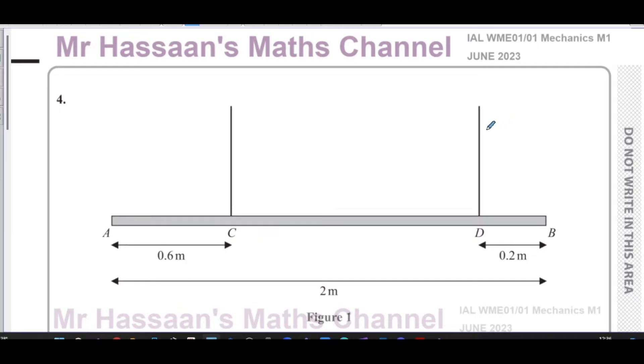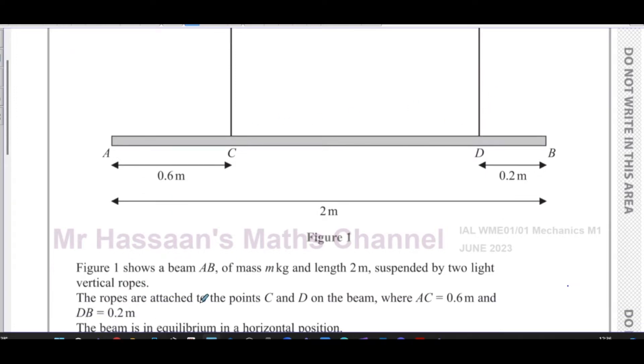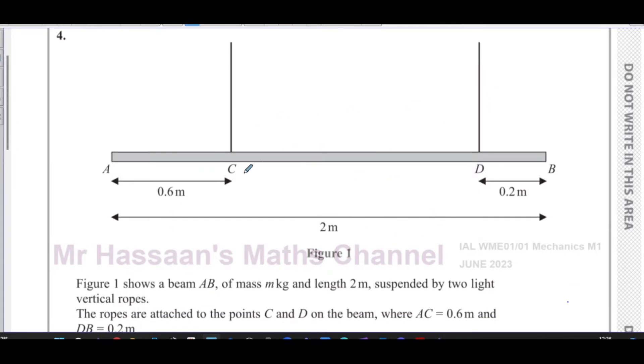This question is about moments. Figure 1 shows a beam AB of mass m kilograms and length 2 meters, suspended by two light vertical ropes. The ropes are attached to points C and D on the beam where AC is 0.6 meters and DB is 0.2 meters.